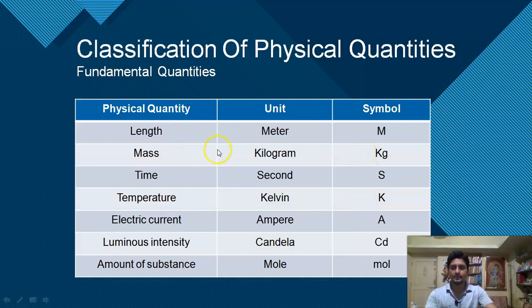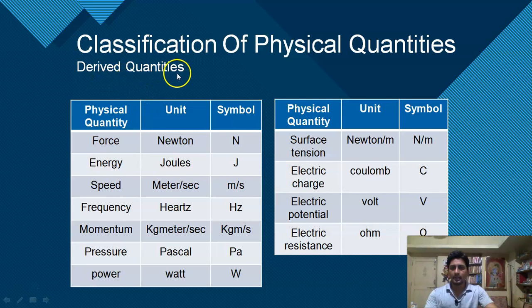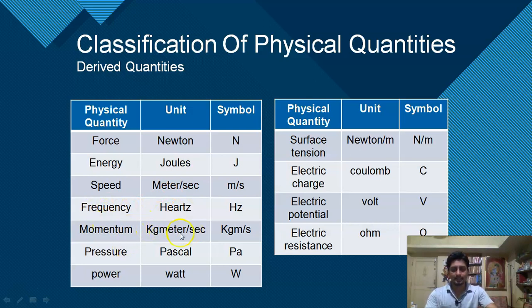Derived quantities include: force (newtons), energy (joules), speed (meter per second), frequency (hertz), momentum (kg·m/s), pressure (Pascal), power (watt), surface tension (Newton per meter), electric charge (coulombs), electric potential (volt), and electric resistance (ohm).